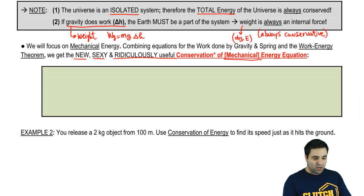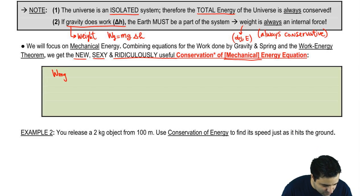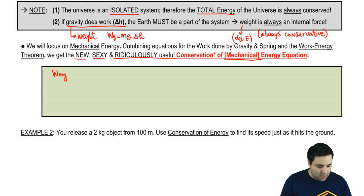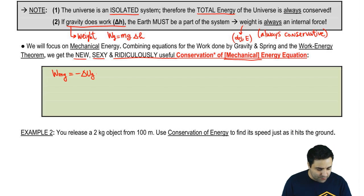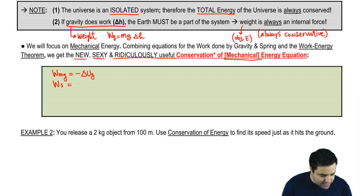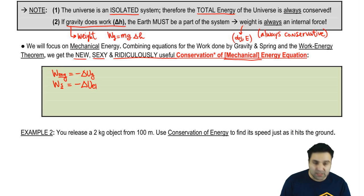I'm going to derive this because there are a lot of components you need to know. So remember that the work done by weight — work done by g or mg, both notations are fine — is the negative of the change in potential energy. The work done by a spring, or by the spring force, is the negative of the change in elastic energy.